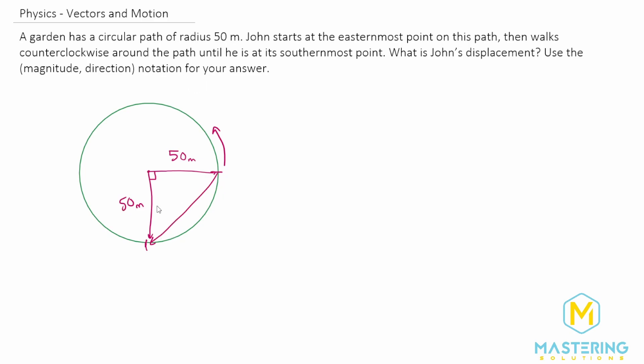So we'll get to that in just a second but first let's use Pythagorean theorem to find what the displacement is. So we have c² = a² + b² and then to isolate for c we'll take the square root of both sides.